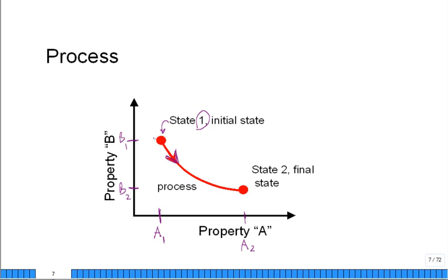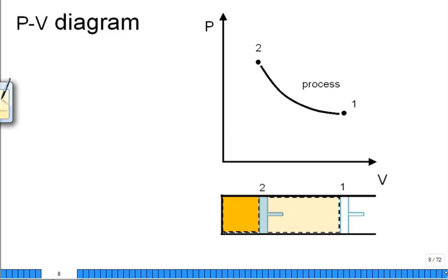The states are indicated by points on the property diagrams, and the process connects the initial and the final state. You could have different processes to go between states. Our favorite is a PV diagram, a pressure volume diagram. What's on the x-axis? Volume. SI unit for volume? Meter cubed. Pressure is on the y-axis. SI unit for pressure? Pascal, kilopascal.